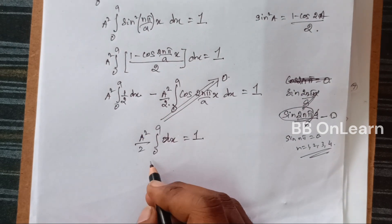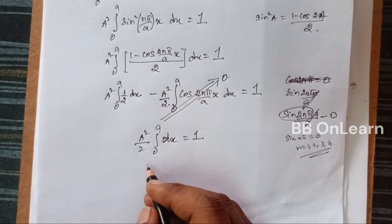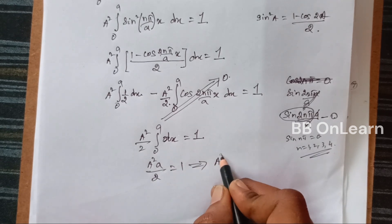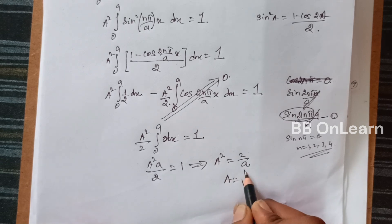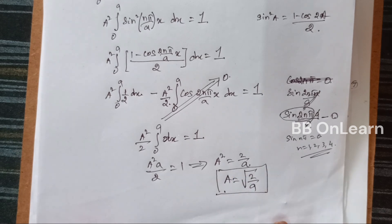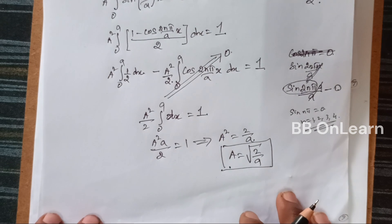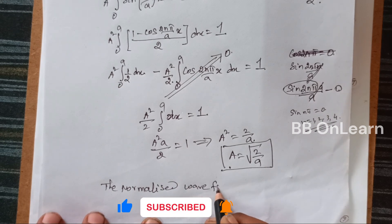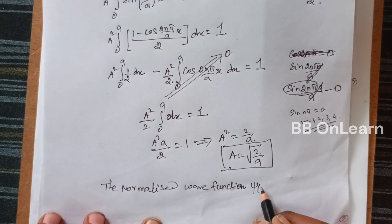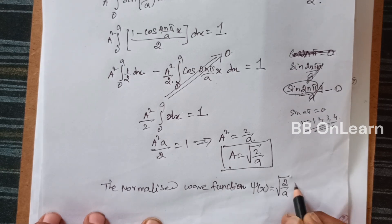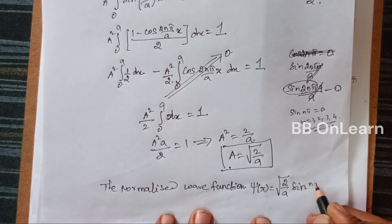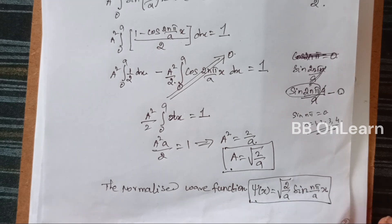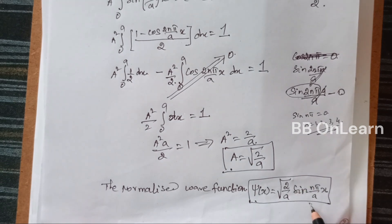So the result simplifies to A squared times a divided by 2 equals 1. Therefore A squared equals 2 divided by a, and A equals the square root of 2 over a. The normalized wave function is psi of x equals the square root of (2/a) times sin(nπ/a · x). This is the normalized wave function.